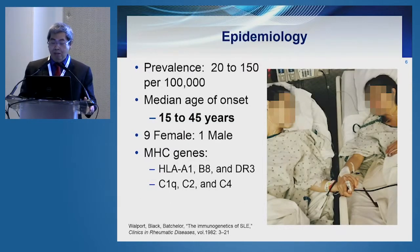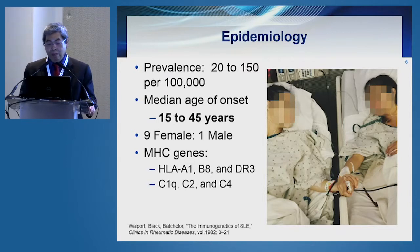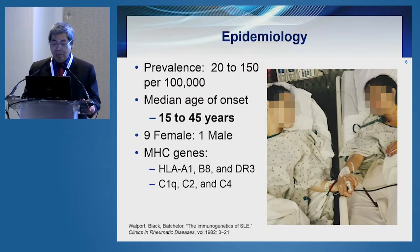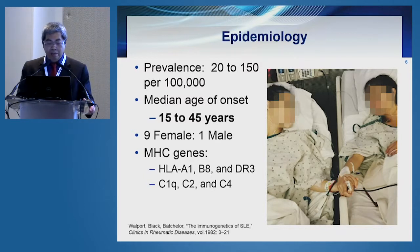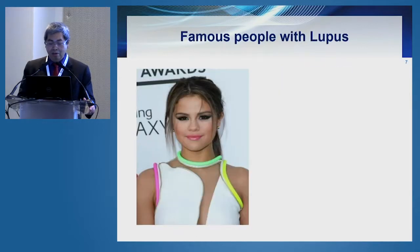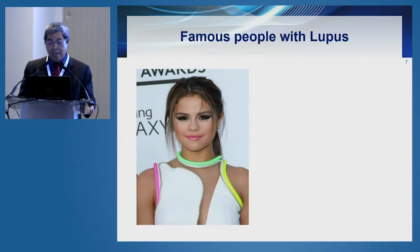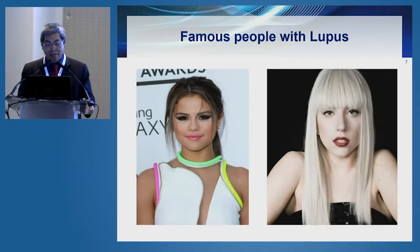The prevalence is about 100 per 100,000 population, and this does affect young patients with a ratio of nine females to one male. It's associated with some MHC genes. There are probably many famous people who have been diagnosed with lupus — here's one who had a kidney transplant recently.